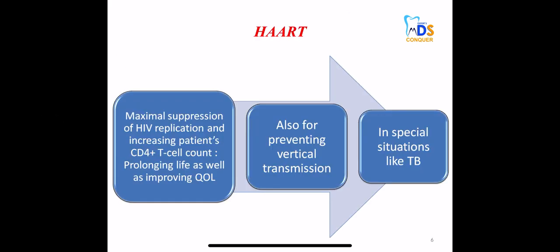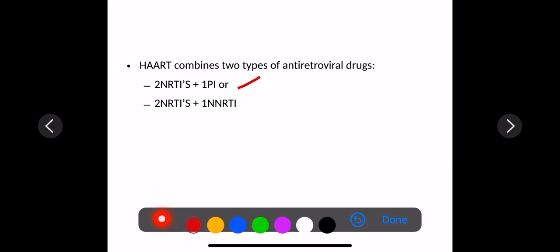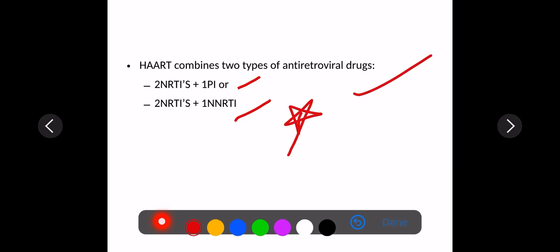Coming to HAART — Highly Active Antiretroviral Therapy — it is important to improve the quality of life of the patient, prevent vertical transmission, and is used in special conditions like tuberculosis. HAART combines mainly two types: two nucleoside reverse transcriptase inhibitors plus one protease inhibitor, or two nucleoside reverse transcriptase inhibitors plus one non-nucleoside reverse transcriptase inhibitor.